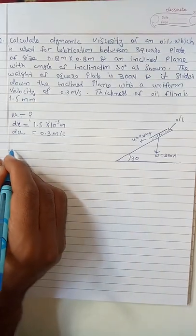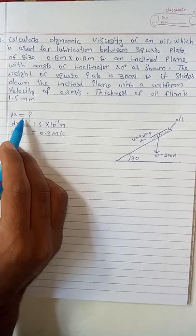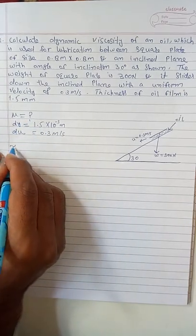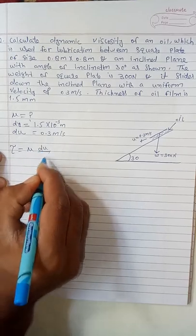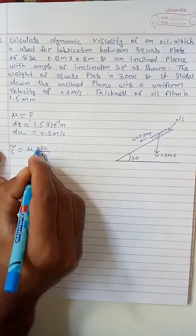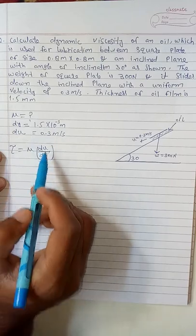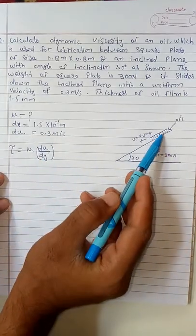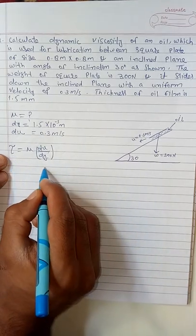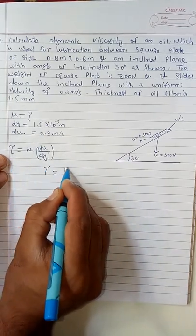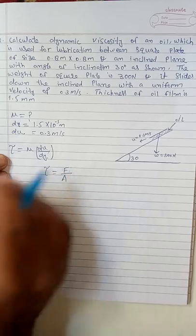Now, what I have to find is the dynamic viscosity. We know τ = μ × (du/dy). This relative velocity is given, and the distance—the thickness of oil film—is also given. So I have to first find τ, which equals force per unit area.